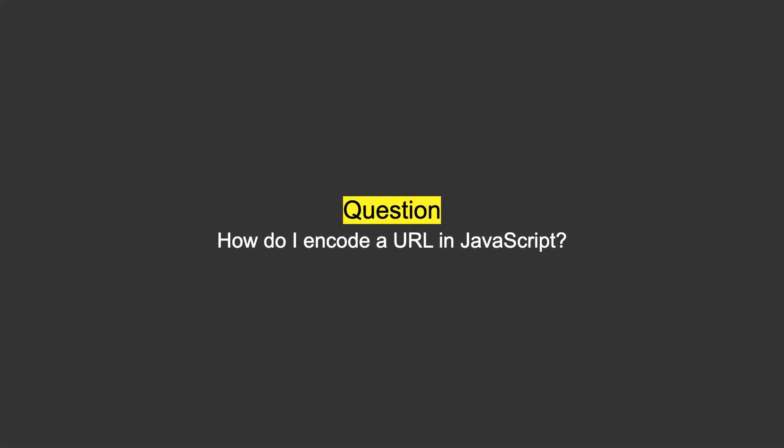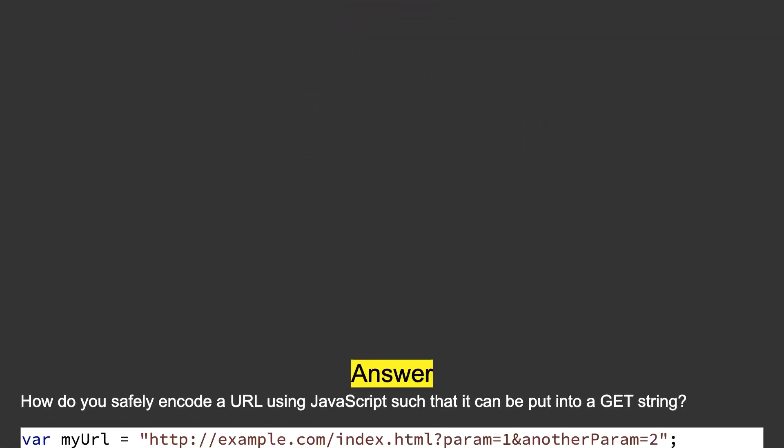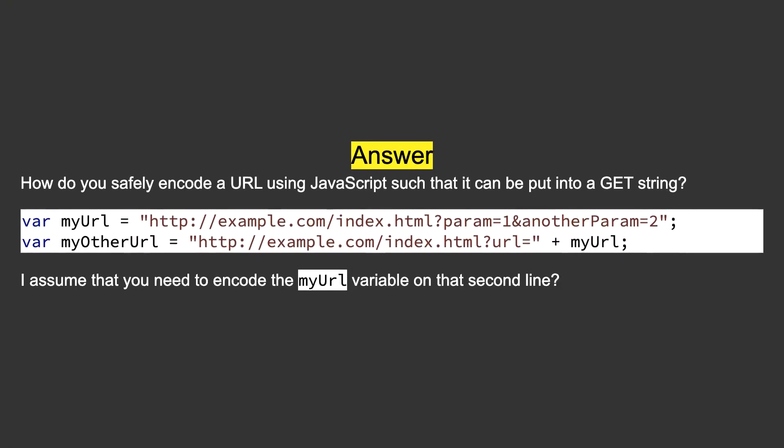How do you safely encode a URL using JavaScript such that it can be put into a GET string? I assume that you need to encode the my URL variable on that second line.